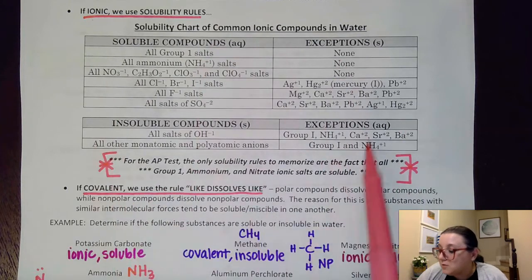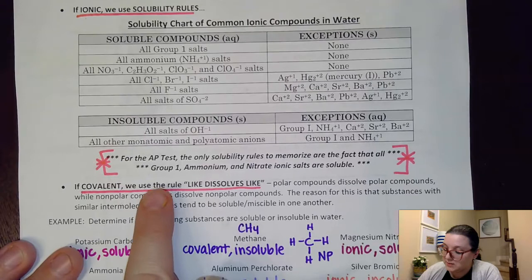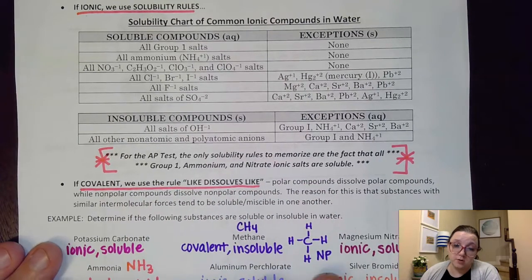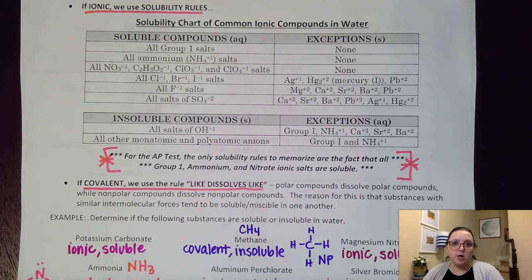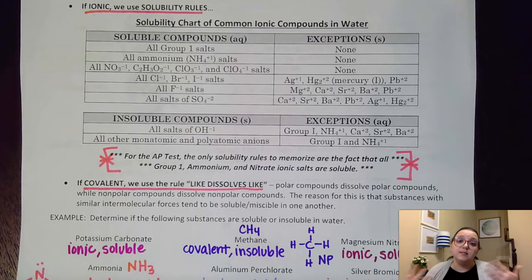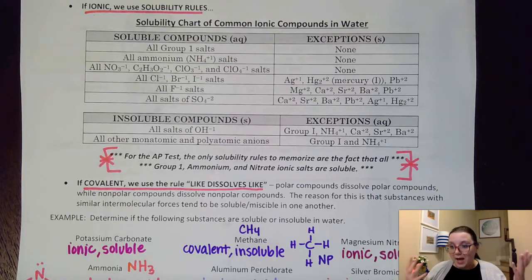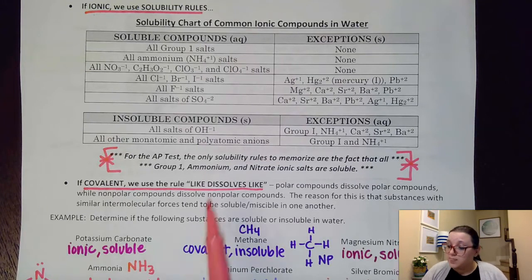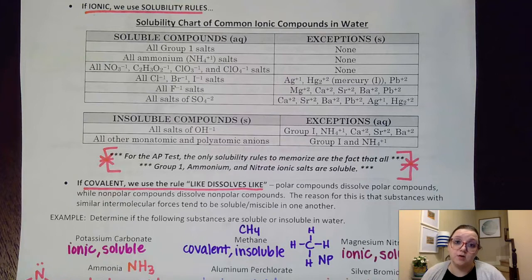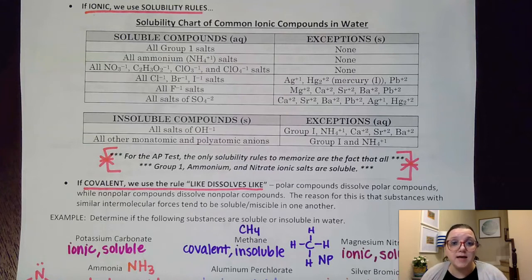On the AP test, you're expected to know that group one, ammonium, and nitrate salts are soluble. If you need more information from the chart, they may give you a modified version or additional information in the problem. However, on our class practice worksheets I typically use examples that don't fall into those three categories, so you'll often need to reference the full solubility chart.